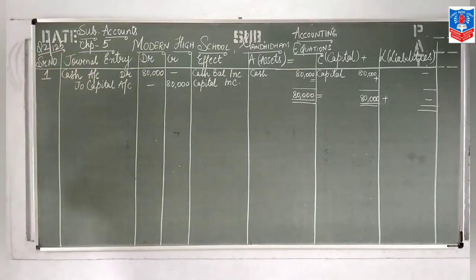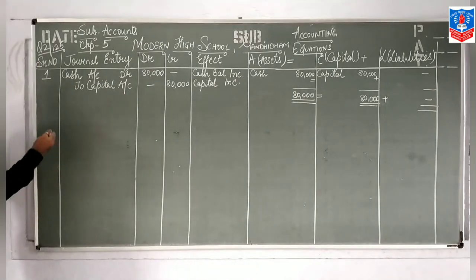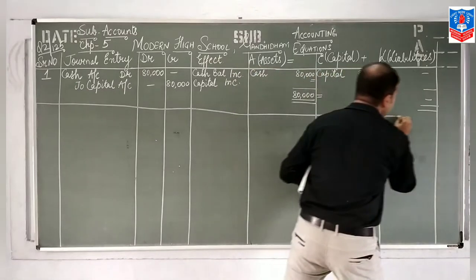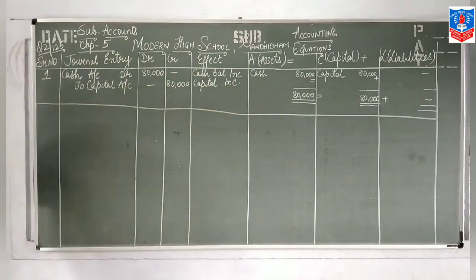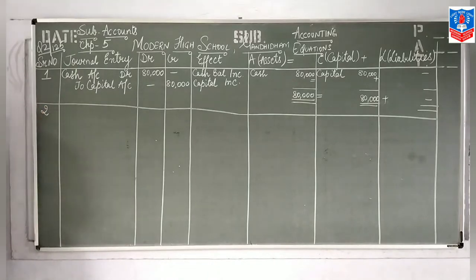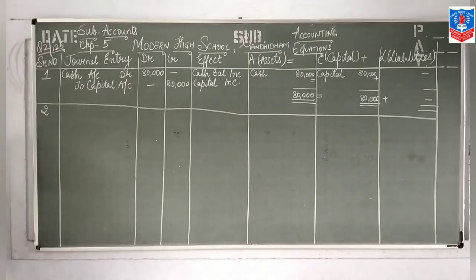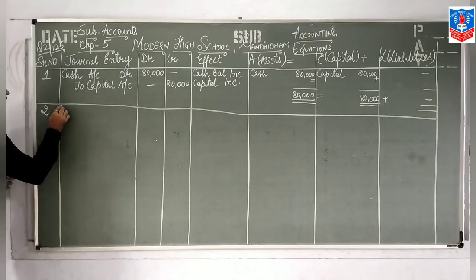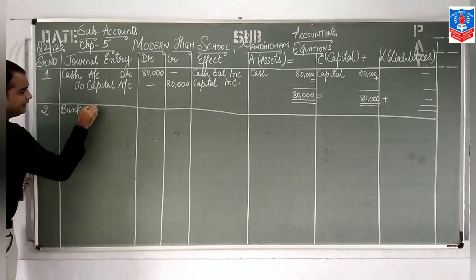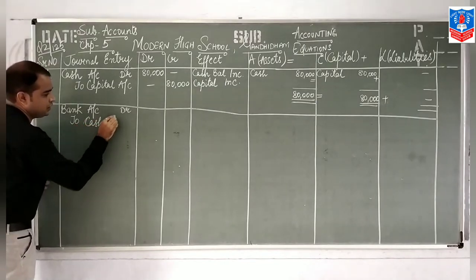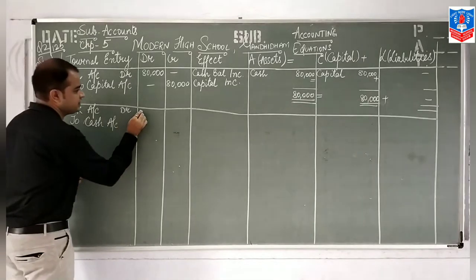After completion of each and every transaction we draw a concluding line like this. Now after completion of transaction 1, we will move on to transaction 2. It says: 'Deposited 20,000 with bank and open account.' We have deposited in bank. The entry will be: Bank Account debit to Cash Account. We deposited 20,000.